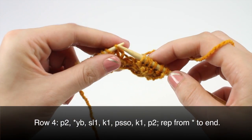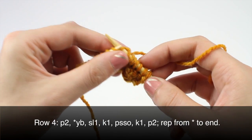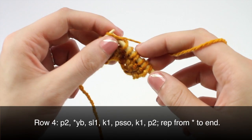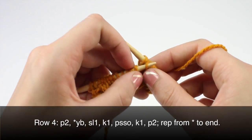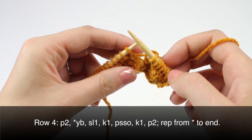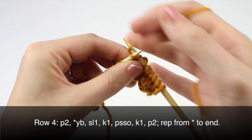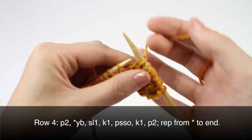So take the yarn to the back, slip one, knit one, pass the slip stitch over, knit one, and purl two.